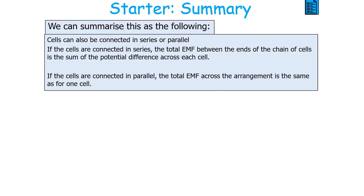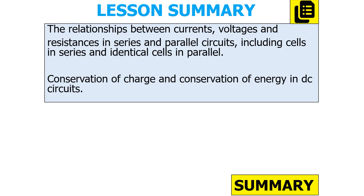To summarize: cells can be connected in either series or parallel arrangements. If cells are connected in series, the total EMF is the sum of the EMF across each cell. If cells are connected in parallel, the total EMF across the arrangement is the same as it is for one cell in that arrangement. In this lesson we've looked at the relationships between current, voltages, and resistances including cells in series and identical cells in parallel.